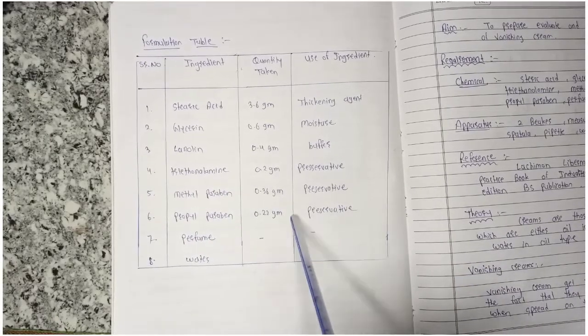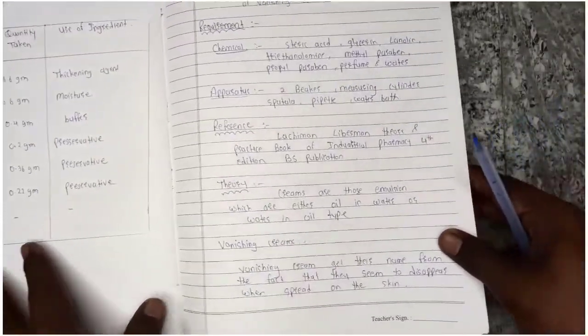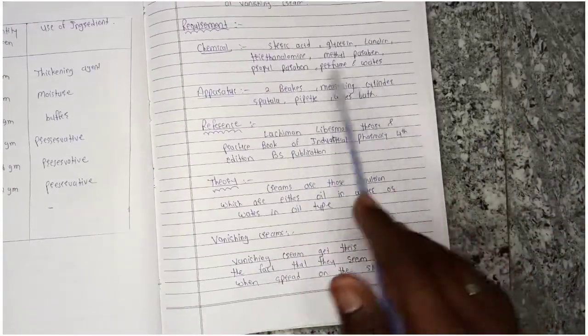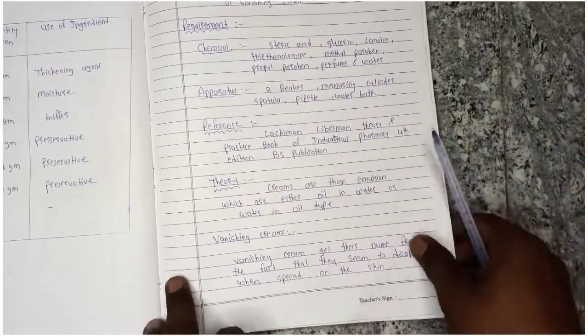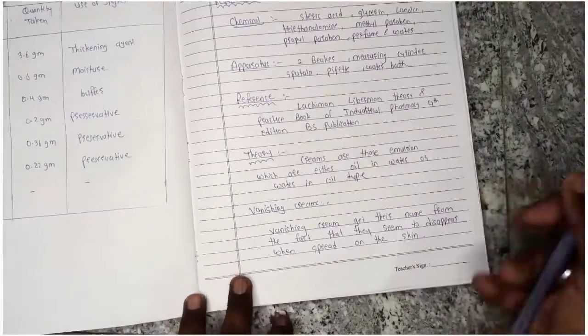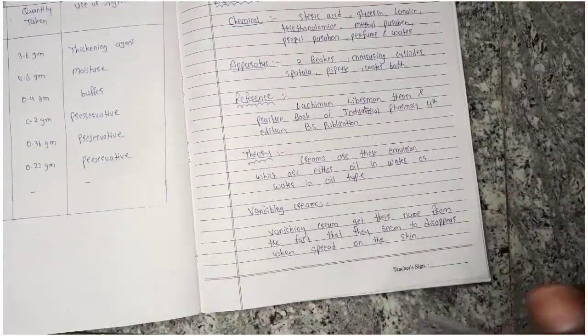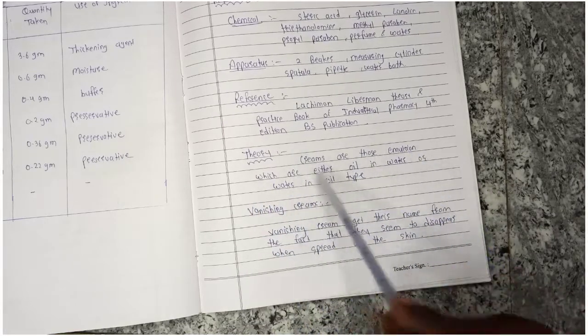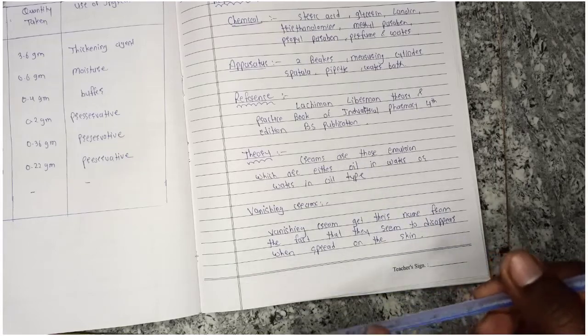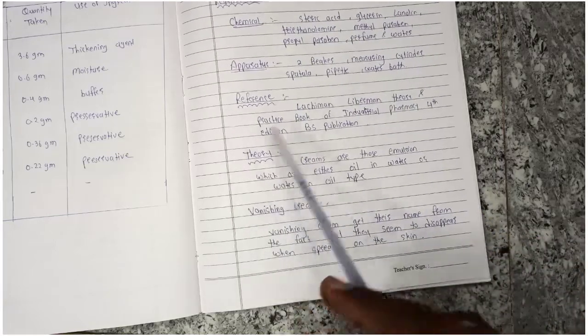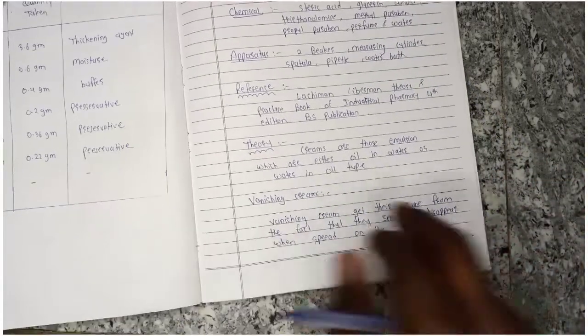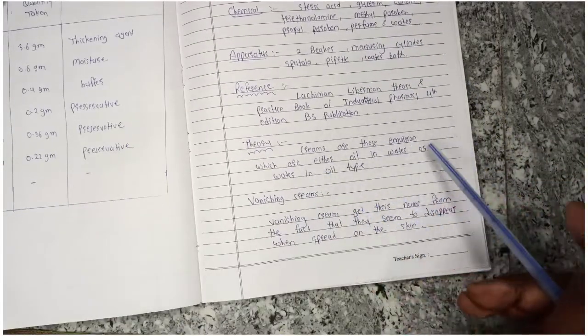We will see which apparatus is needed. We will have two beakers, a measuring cylinder, a spatula, pipette, and a water bath. After that, we will see that creams are emulsions which are either oil in water or water in oil. This vanishing cream is an oil in water type emulsion.